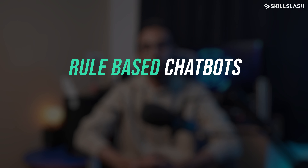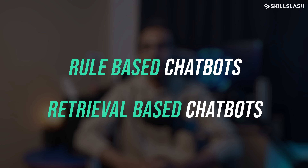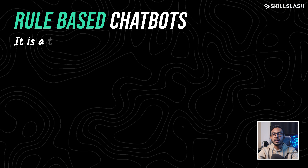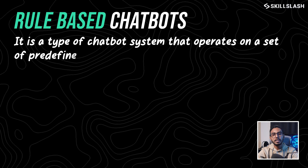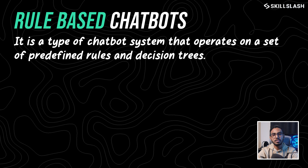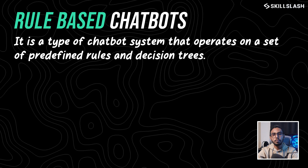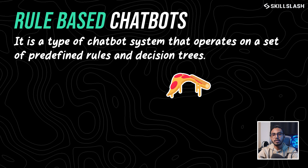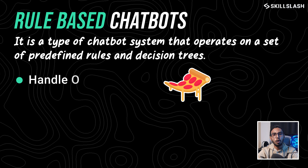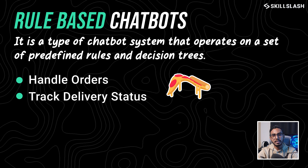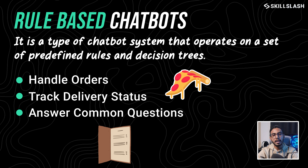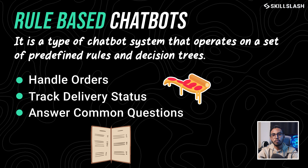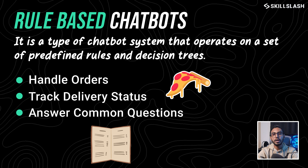Chatbots are basically categorized into two types: Rule-based Chatbots and Retrieval-based Chatbots. Rule-based Chatbots operate on a set of predefined rules and decision trees. For example, a rule-based chatbot for a pizza delivery service might have rules to handle orders, track delivery status, and answer common questions about menu items and pricing. Each rule corresponds to a specific type of user query.